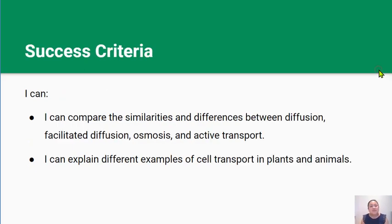By the end of this lesson you should be able to compare the similarities and differences between diffusion, facilitated diffusion, osmosis and active transport, and you should be able to explain the different examples of cell transport in plants and animals.